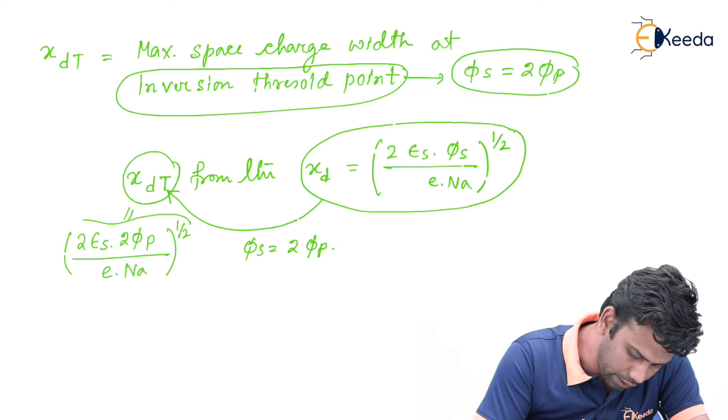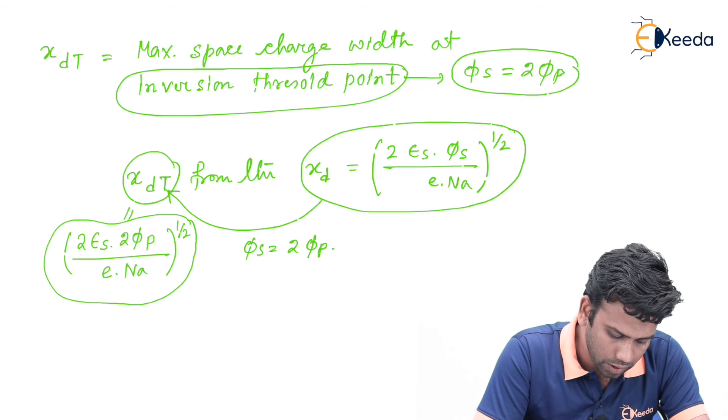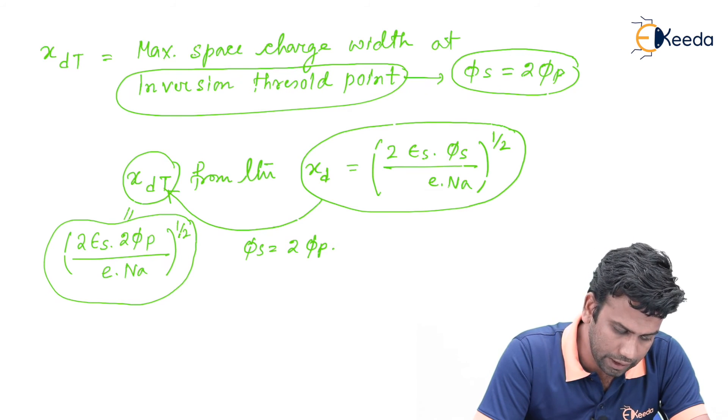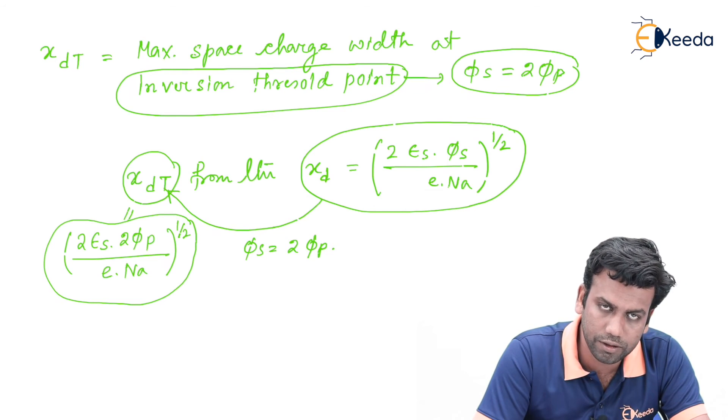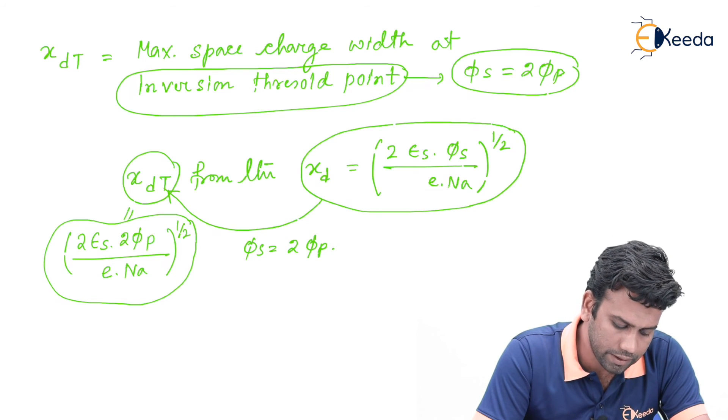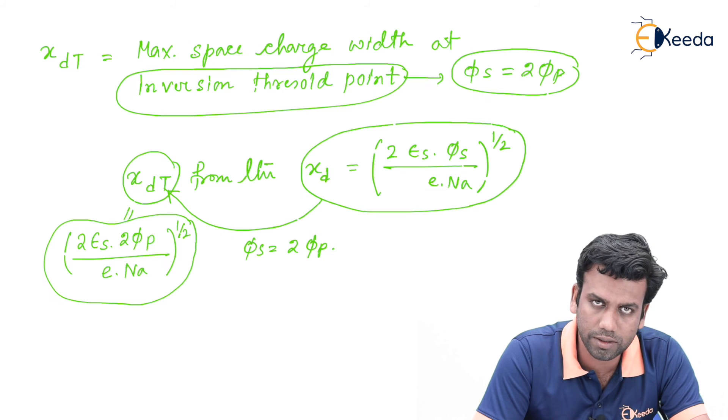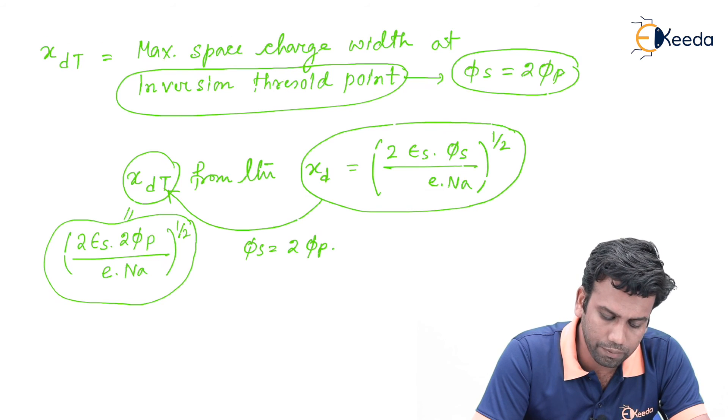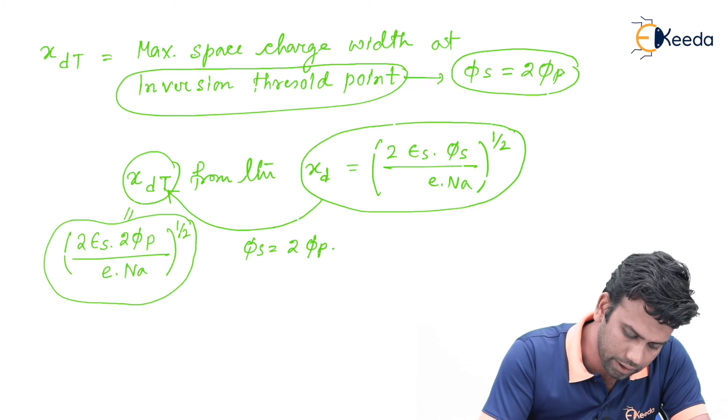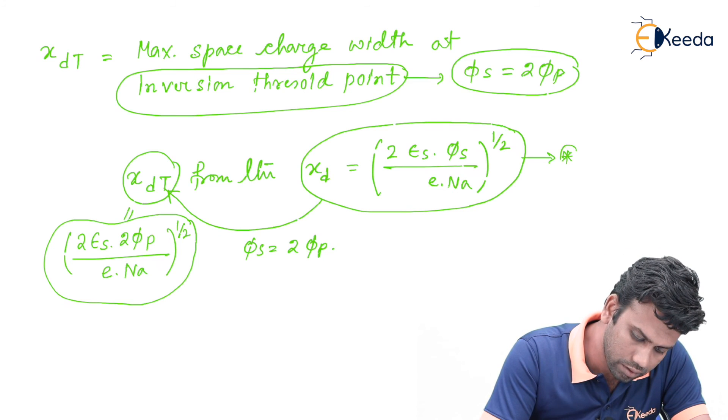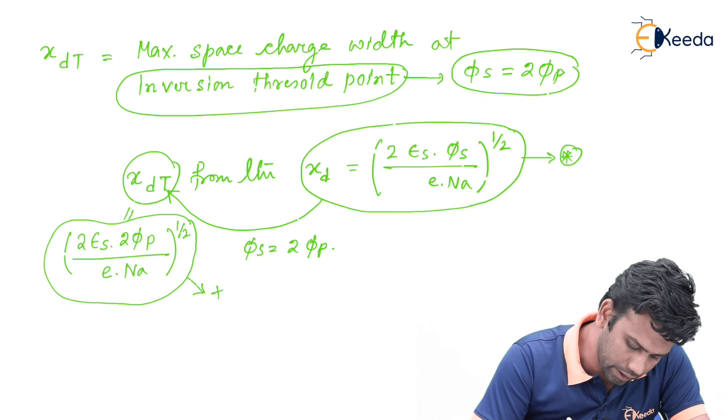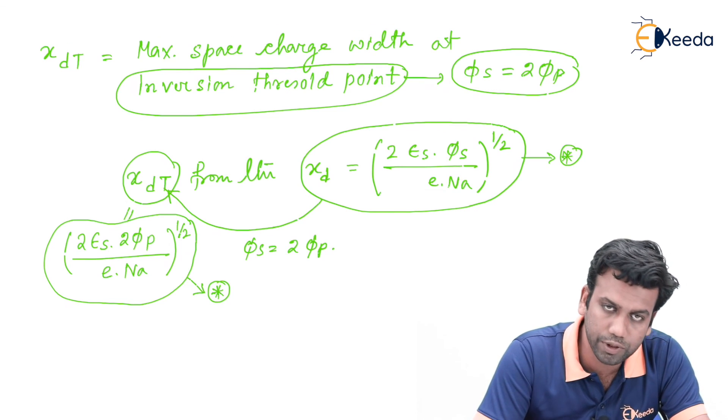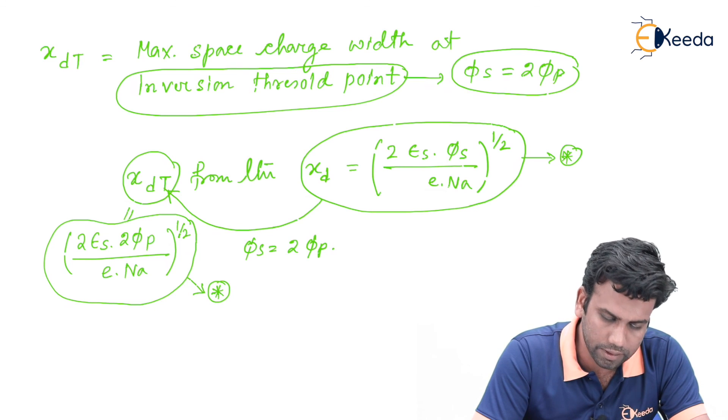This is the equation for maximum depletion layer or inversion layer that has been created, and the value of the gate voltage for which this inversion threshold point occurs is called the threshold voltage. This is all about the threshold voltage of a MOS capacitor, and for the examination these equations are very much important with respect to gate numericals. Thank you.